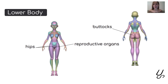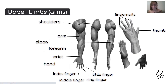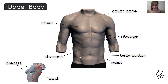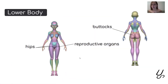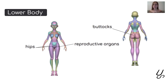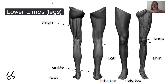Now, what can we say about the lower body? Below the waist, on the left and right sides, there are the hips, and between the hips we can see the reproductive organs — the penis in males or vagina in females. At the back of the lower body we can see the buttocks. That is all about the lower body.